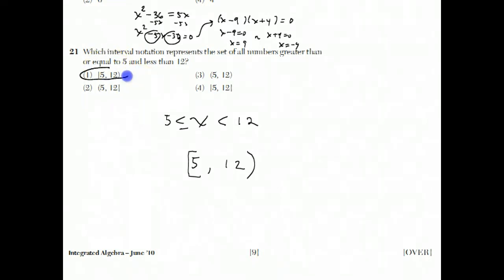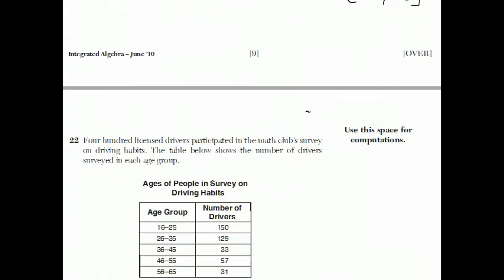And that's why of these four choices, the answer is choice 1. So, had the question said greater than 5 and less than 12, then it would look like this. That's like saying x is greater than 5 and strictly less than 12. If it was greater than or equal to 5 and less than or equal to 12, that would look like that. So, the square bracket is when it includes the number, and the rounded parenthesis is when it doesn't.